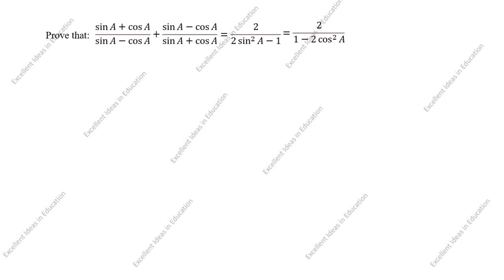Hi students. Welcome to my channel Excellent Ideas in Education. Today we are going to solve this trigonometry problem. Prove that sin a plus cos a divided by sin a minus cos a, plus sin a minus cos a divided by sin a plus cos a, equals 2 divided by 2 sin square a minus 1, equals 2 divided by 1 minus 2 cos square a.